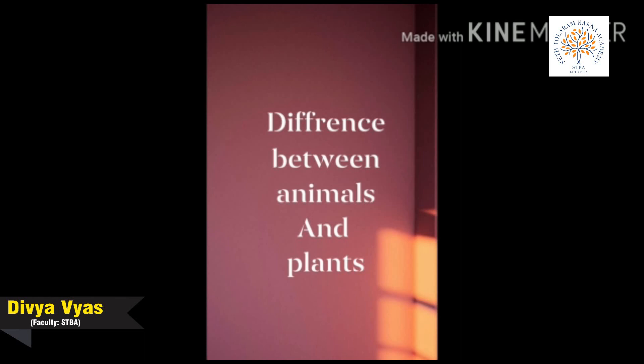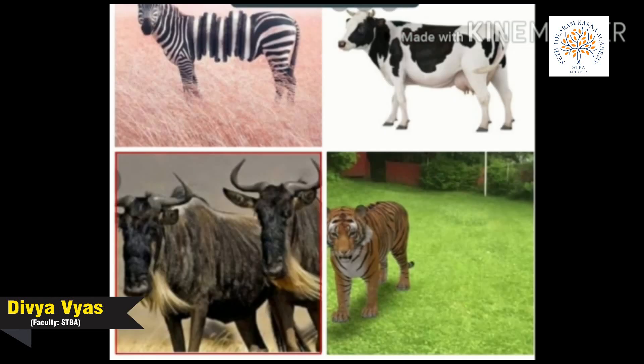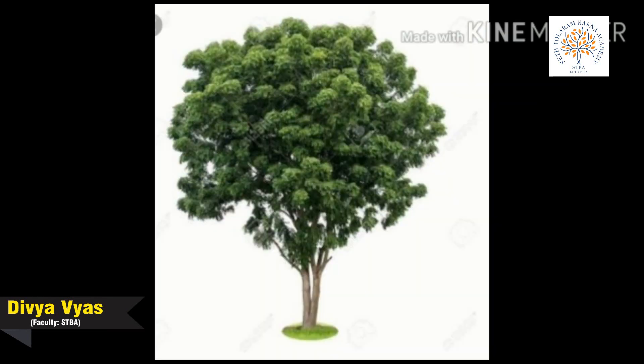Our next point is the difference between animals and plants. Both animals and plants are living things. They can both move, grow, reproduce, feel, and die. So how can we tell the difference between them? Let's start.